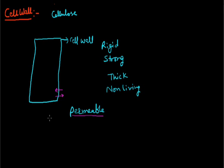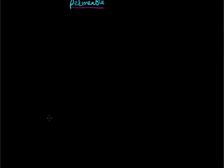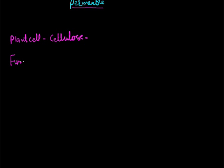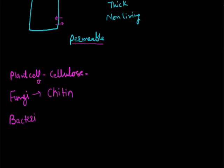Now we discuss about the cell wall in various organisms. First of all, cell wall is present in plant cells and it is made up of cellulose. The substances deposited on it are called pectin and lignin. In the case of fungi, the cell wall is made up of chitin. Chitin is also a polysaccharide. In the case of bacteria, bacteria also have the cell wall. Bacteria are prokaryotic living beings.